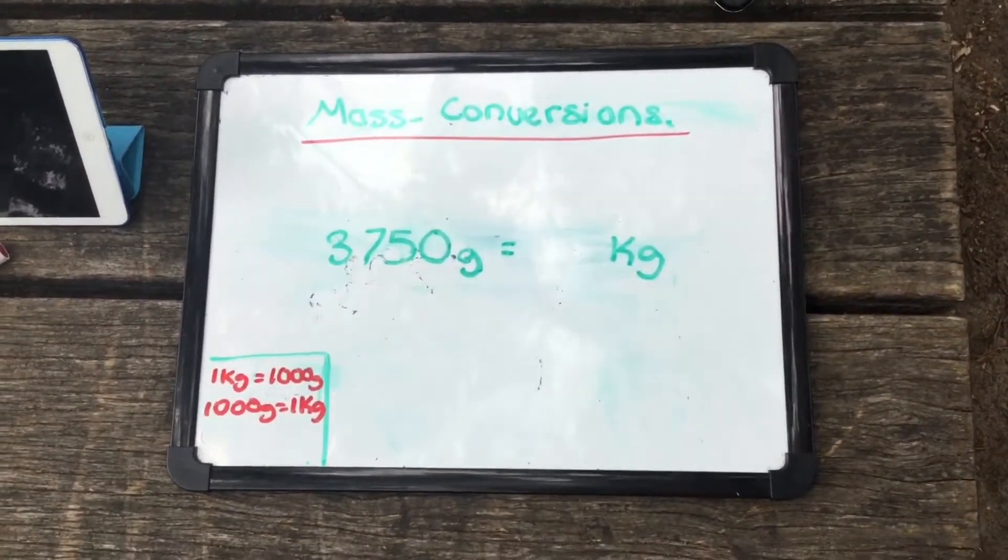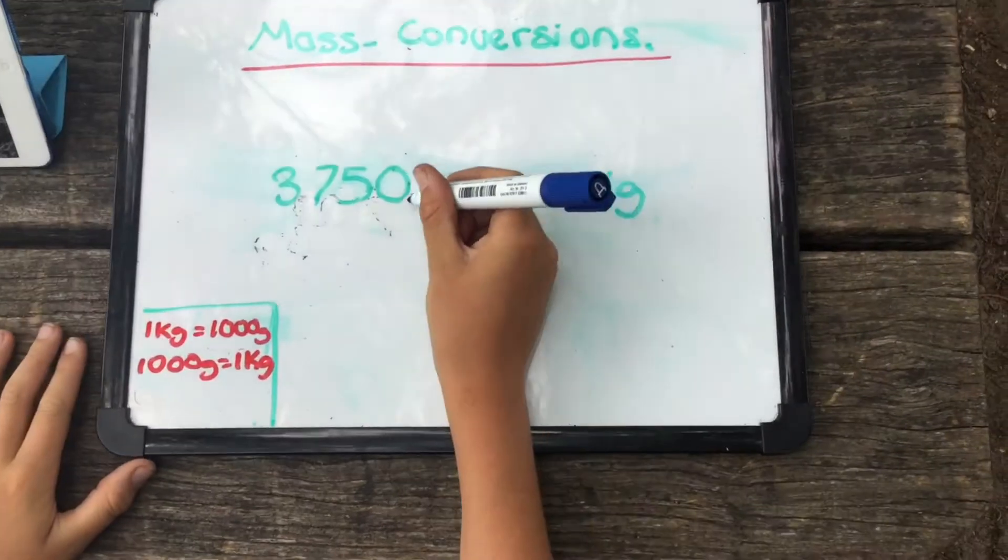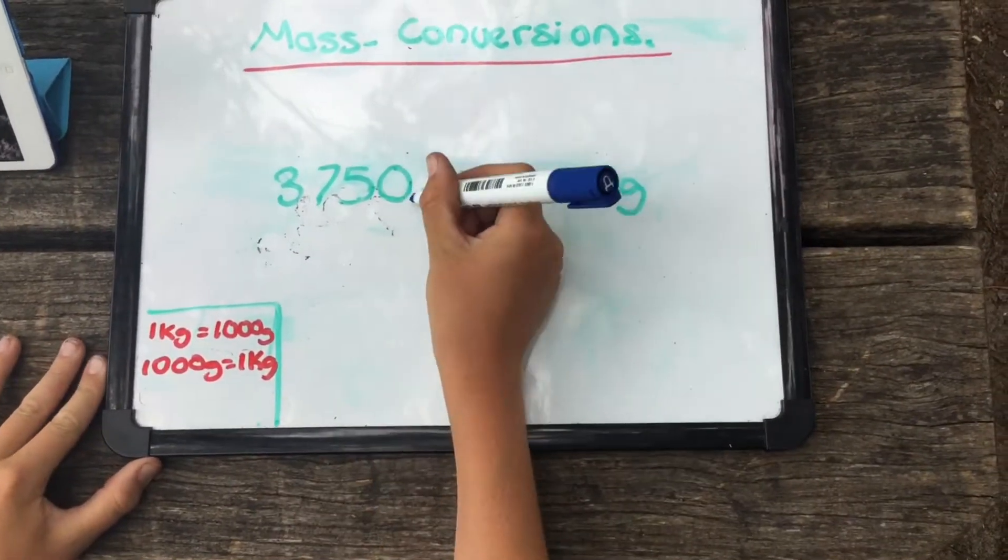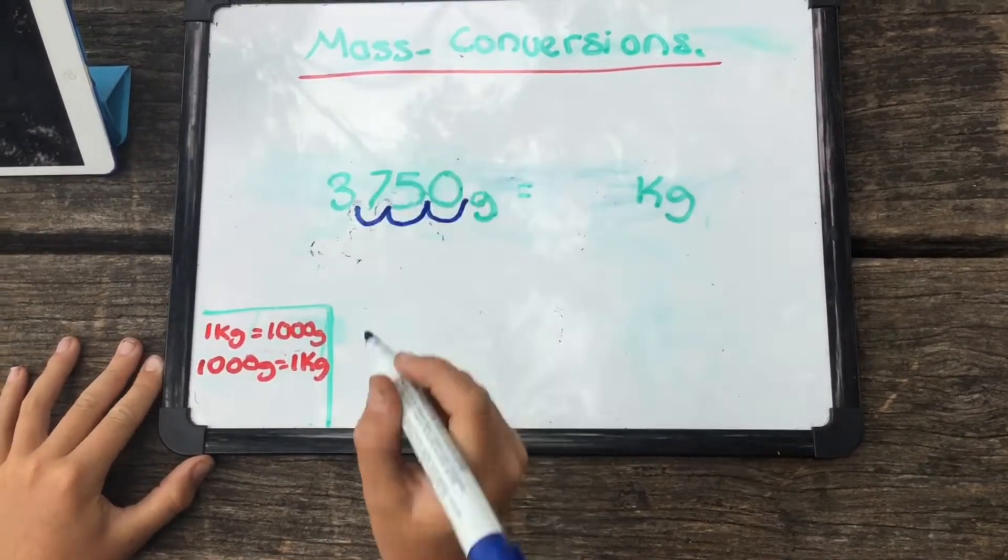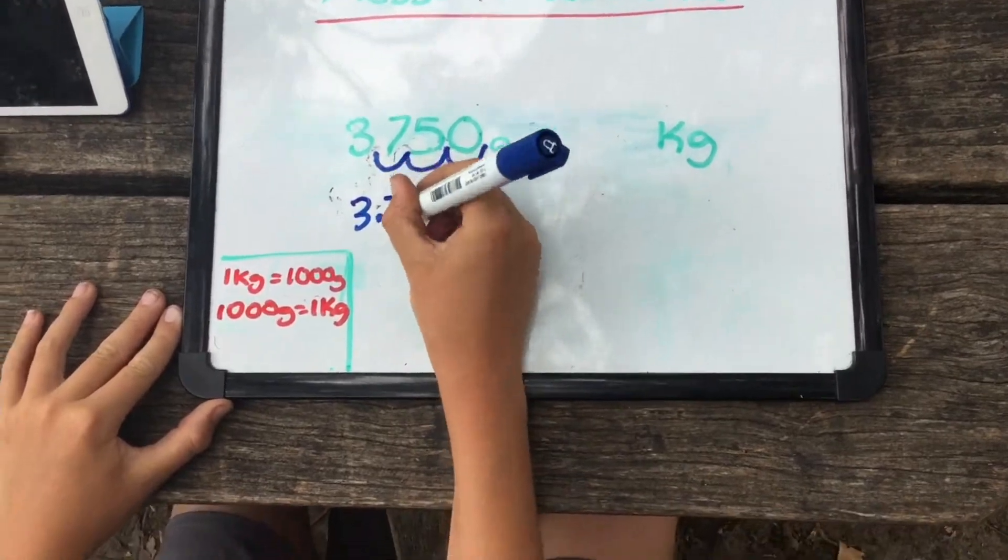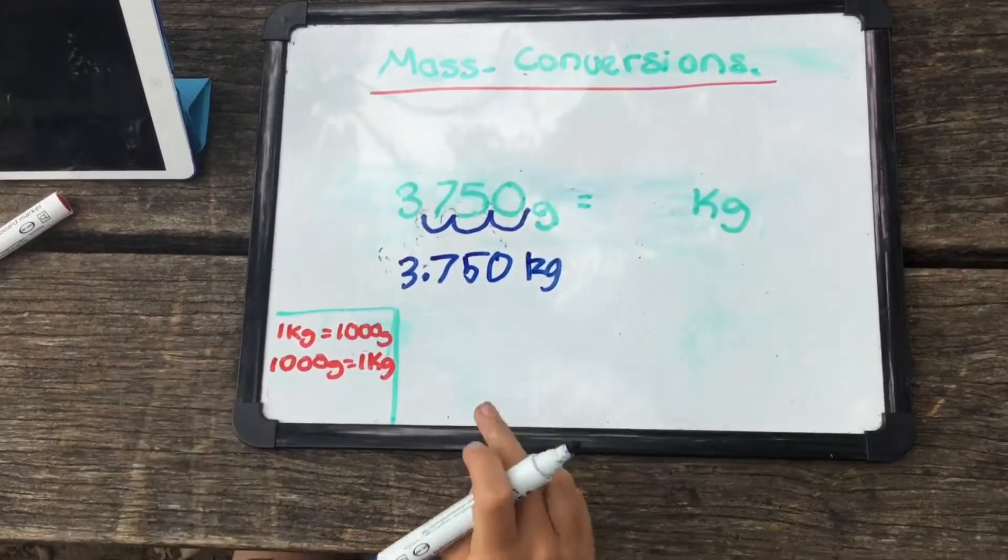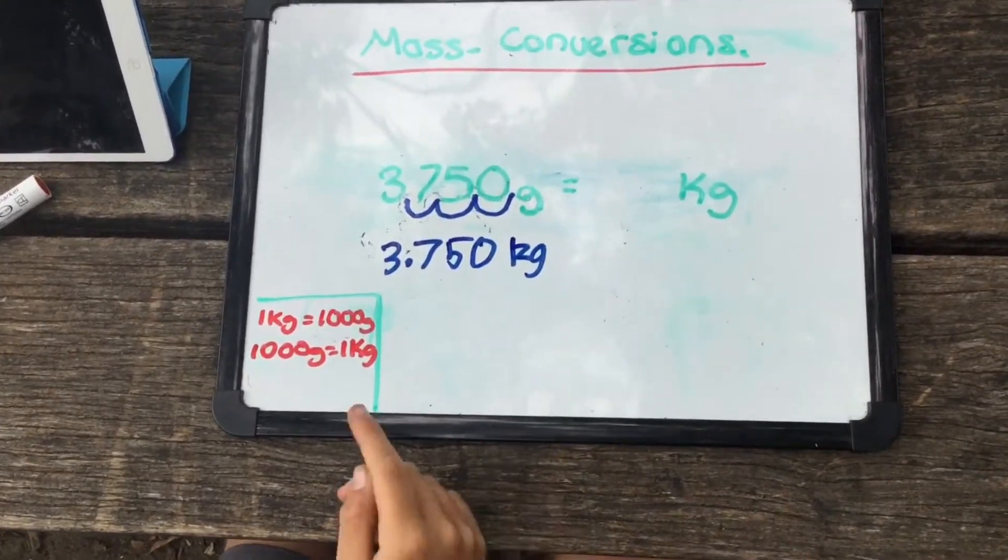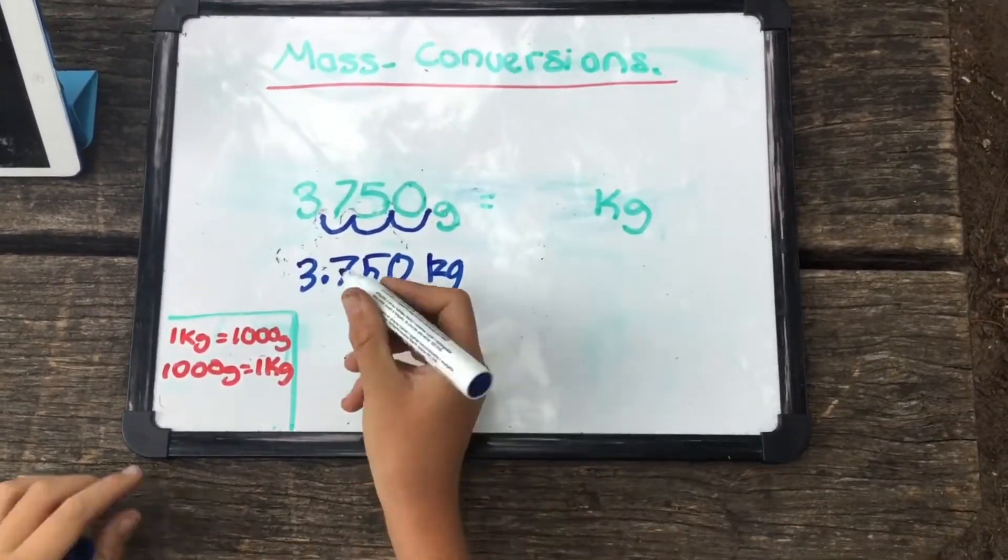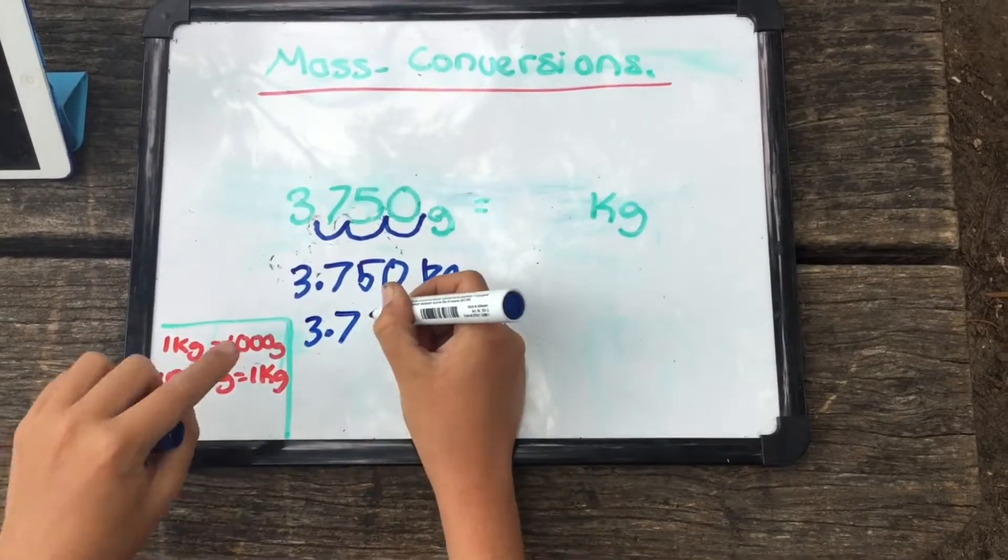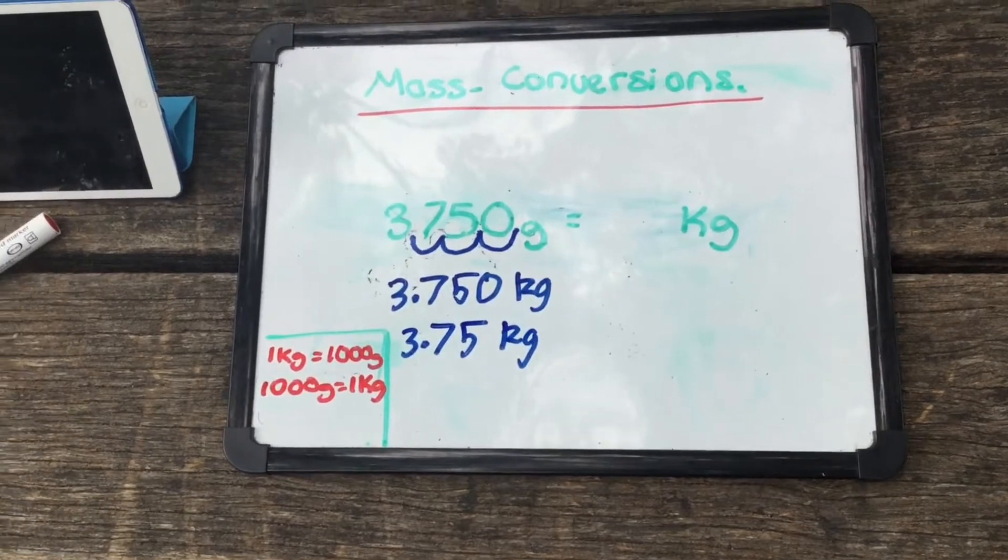And a way that we can do that is by moving the decimal place forward by 3 times. So the decimal place starts here and then we move it forward 3 times. Let's just rewrite that to make it easier. We change it to kilograms because now once it is divided by 1000 it changes from grams into kilograms. And also, now this is in decimals, you don't need the zero. So it is 3.75 kilograms.